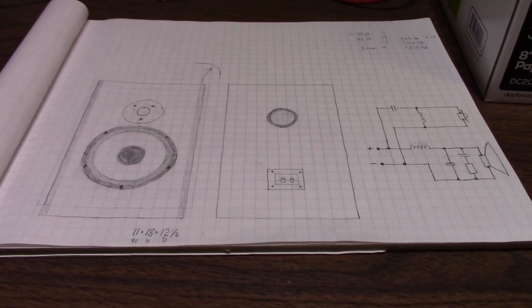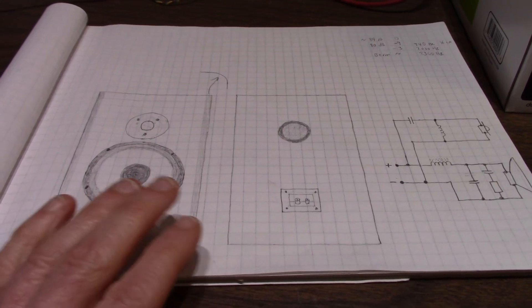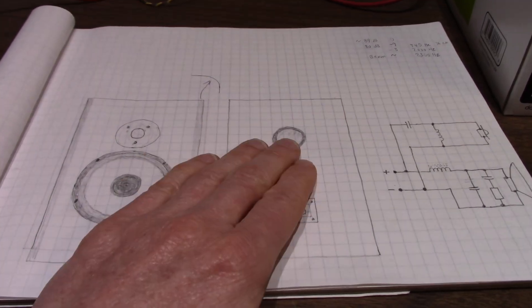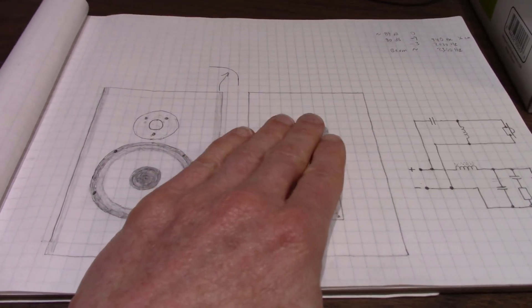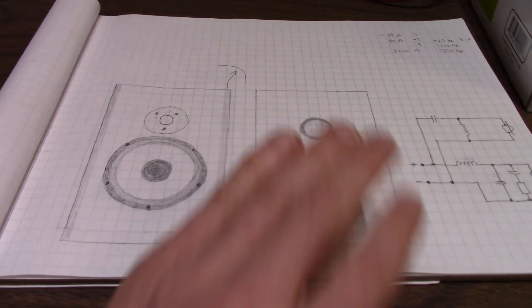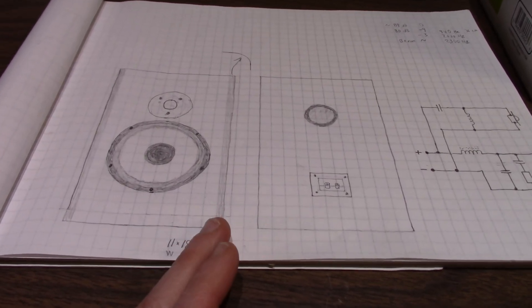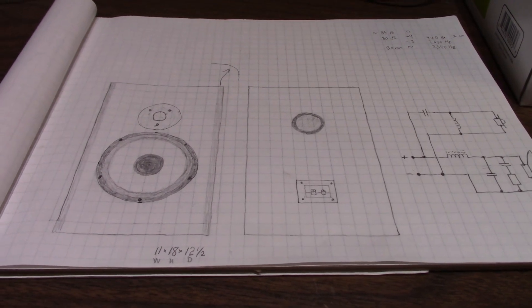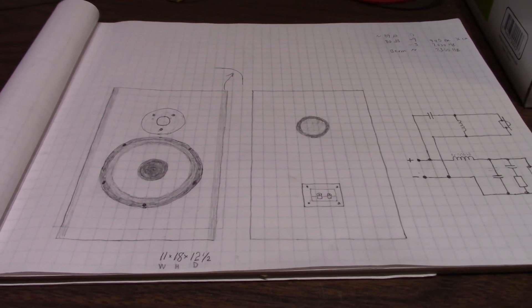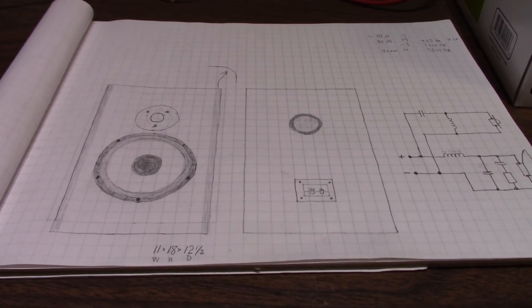So, what I want to do now is go with this design, ported. I mean, not ported, but take the, go sealed, get rid of the port. And that'll allow me to actually shrink the box size down a little bit. Some other things I was thinking of is, when I was looking at crossover components, to make my own crossover, looking for the bobbins and everything.